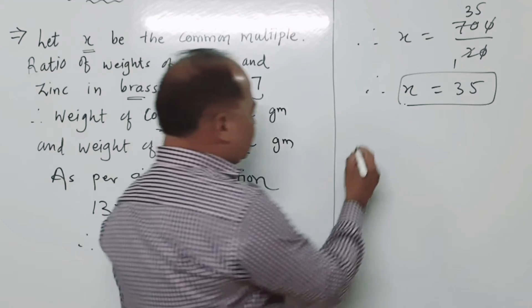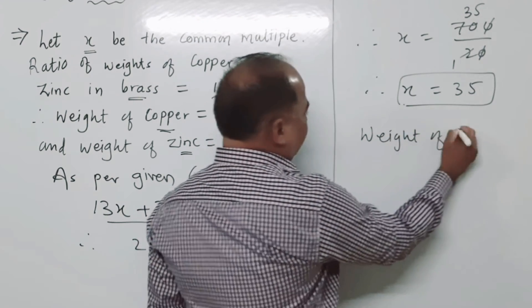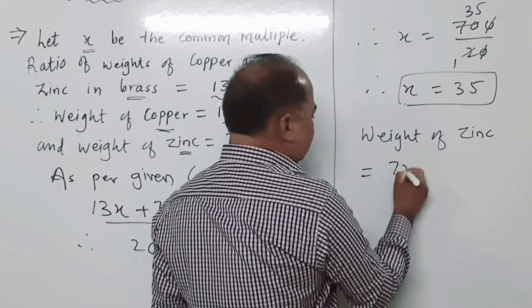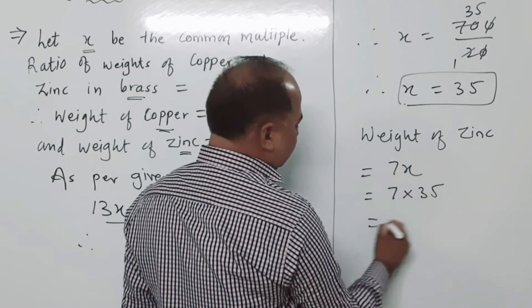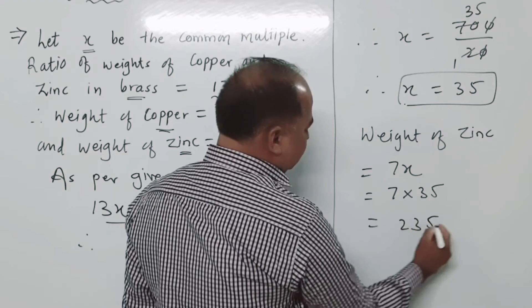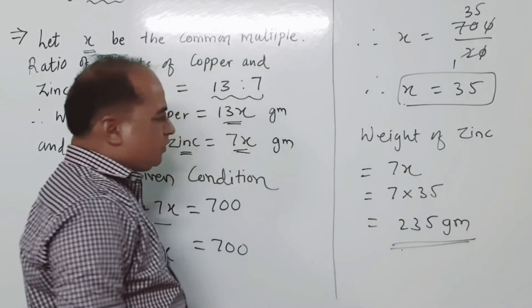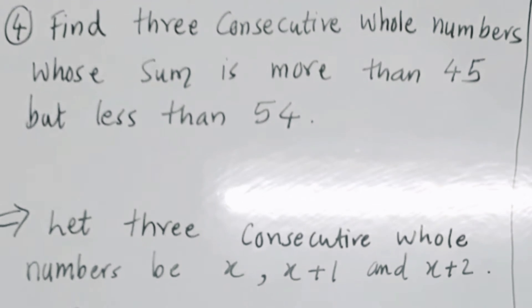So weight of zinc in brass equals 7x, which equals 7 into 35, that is 245 grams. Therefore 245 grams is the weight of zinc in the brass utensil.